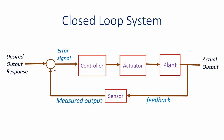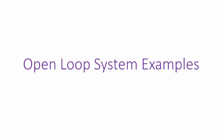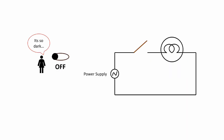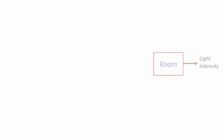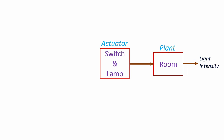Let's go through some examples of open loop systems. Consider a simple example: a light in our room. We want to switch on the light whenever the room is dark. This is done with the help of a switch — we can have two controls, on or off. In this case, the room itself is the plant; we need to control the light intensity of the room. This is controlled by a switch and a lamp, which in turn is controlled by a human being based on his need.